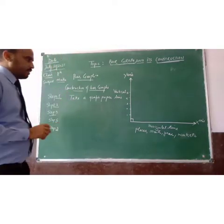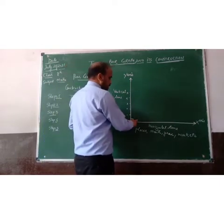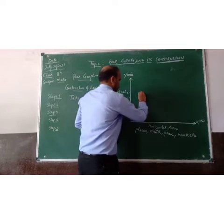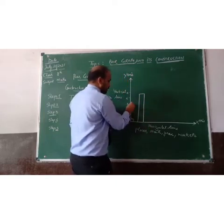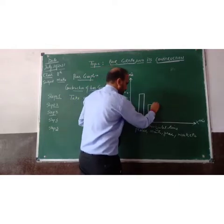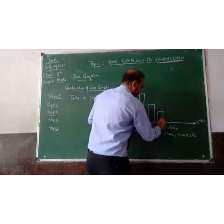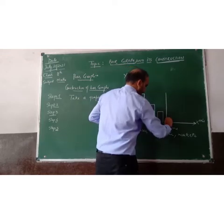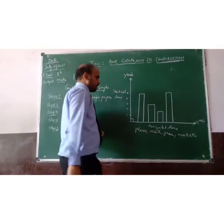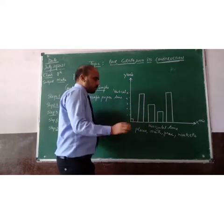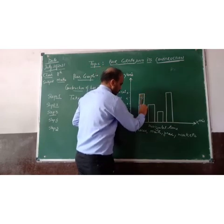Step five: draw bars or rectangles on the horizontal axis of a given height, with equal spacing between them. The space between bars will be equal, and the bars will reach a certain height corresponding to the data value. Finally, you can shade the bar graph.